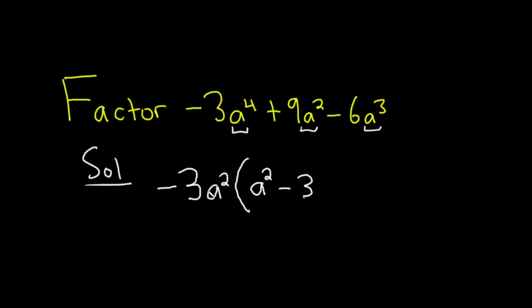Same thing here, negative 3a squared times negative 3. The negative 3 and the negative 3 are going to become a positive 9, and then you have the a squared here already.